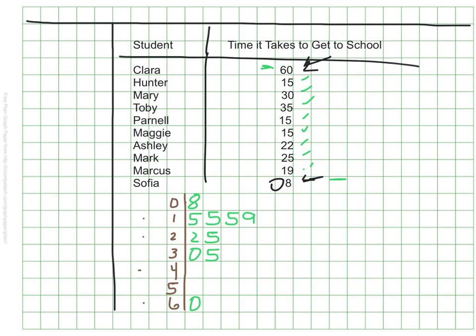A stem and leaf plot also requires a key so that people know how to read my plot. I just took one of my numbers — one stem and one leaf — and put them side by side to tell my reader what it means: that the one on one side across from the nine means nineteen. It doesn't mean one hundred ninety, it doesn't mean one and nine tenths — it means nineteen.